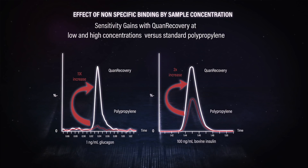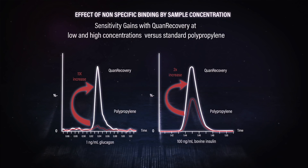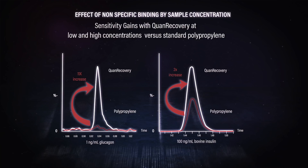So even at higher concentrations, you've got to think about nonspecific binding, because all of that leads to variability problems and difficulty getting reproducible results you can trust. You can imagine this would change how much you lose to nonspecific binding over time as well — from injection to injection, analysis to analysis, you're going to get variability even at a high concentration. An optimized container is definitely key here.